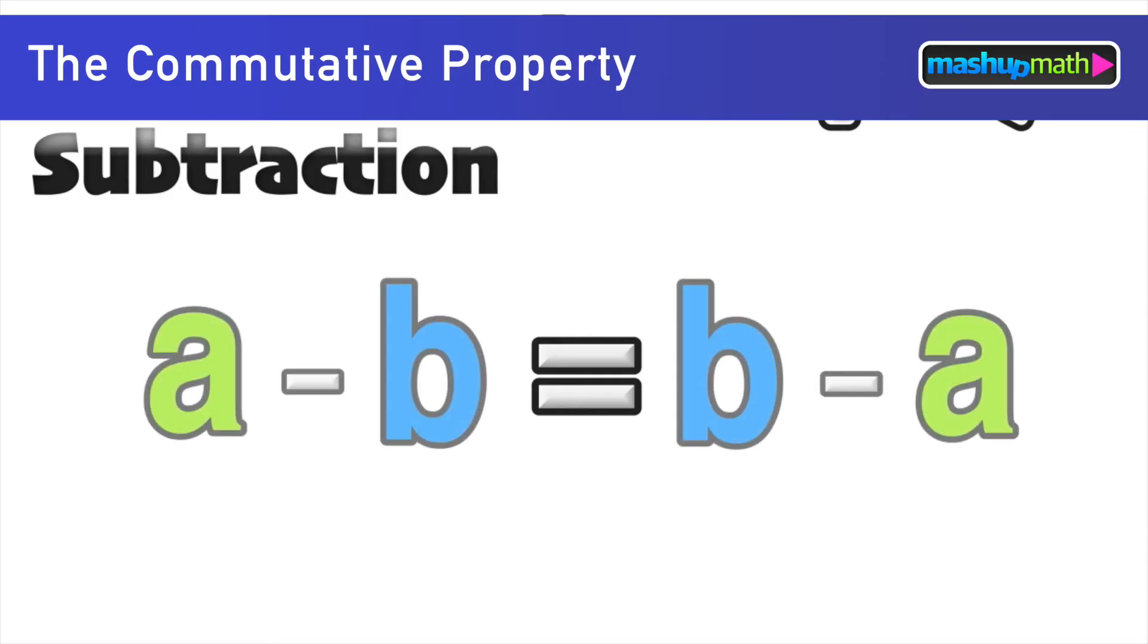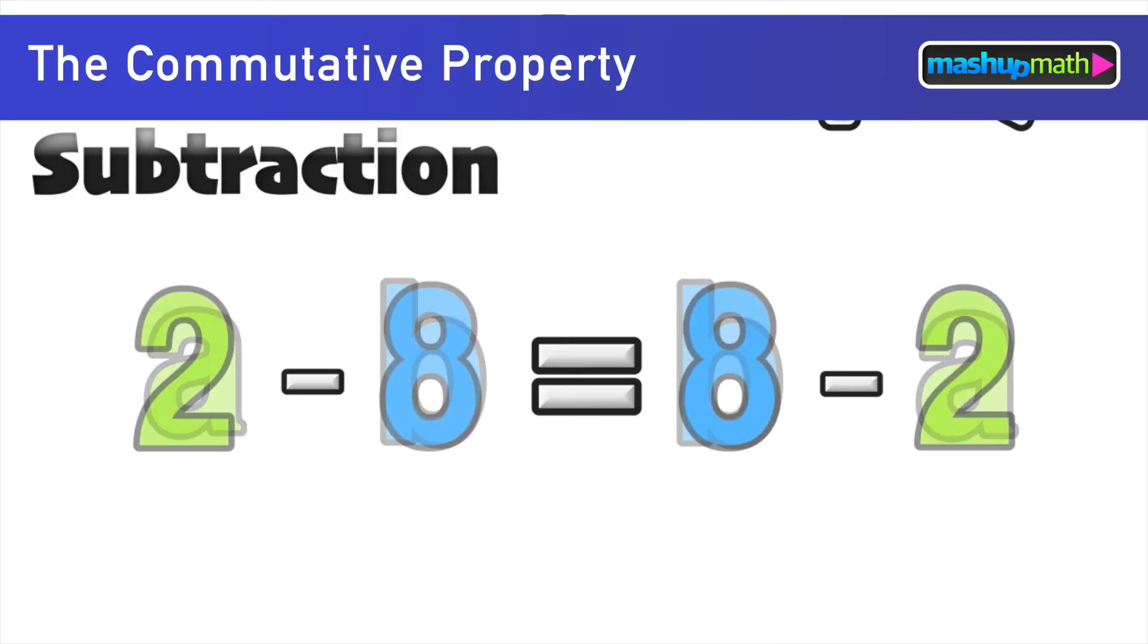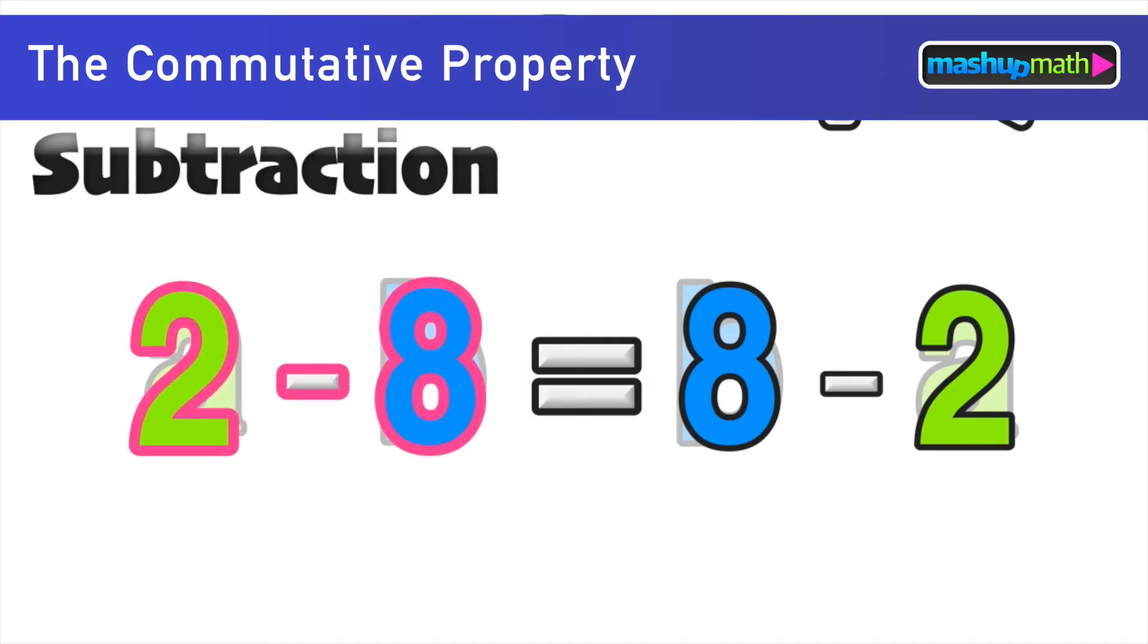So addition is good. What about subtraction? Now let's look at a minus b equaling b minus a. And again we'll replace the a terms with twos and the b terms with eights and check out this example.